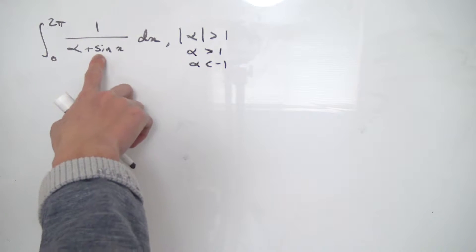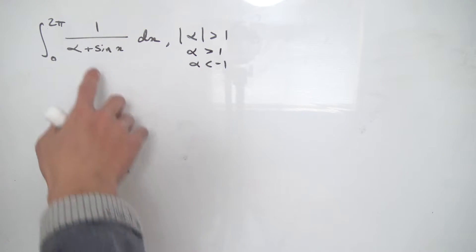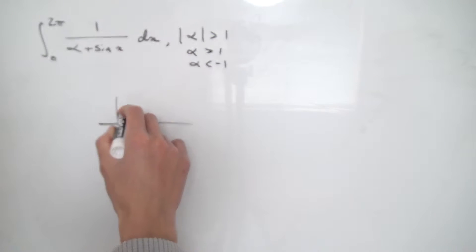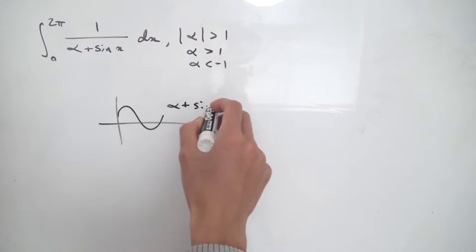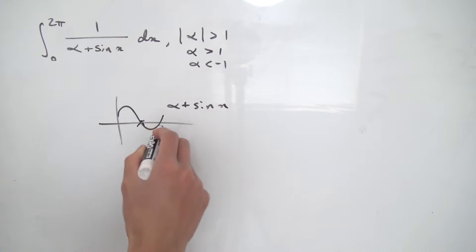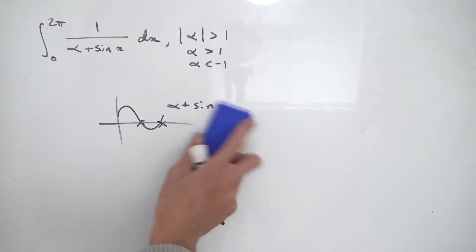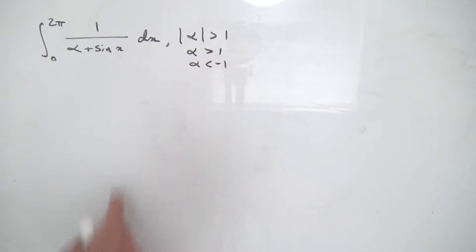The reason is that since we have sine of x added to alpha in the denominator, if alpha were between negative 1 and 1, the denominator would have zeros. So alpha plus sine of theta would cross zero on the interval 0 to 2π, and since we're taking the reciprocal, the integral would blow up and not converge. So the absolute value of alpha must be greater than 1 to avoid any zeros in the denominator.